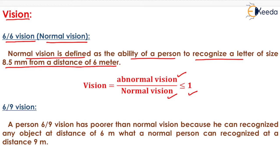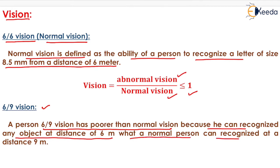The next type is 6/9 vision. A person having 6/9 vision has poorer than normal vision because they can recognize any object at a distance of 6 meters what a normal person can recognize at a distance of 9 meters.